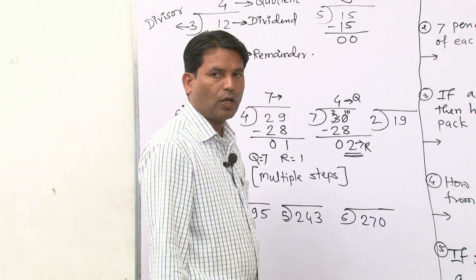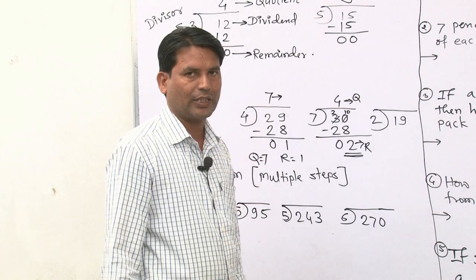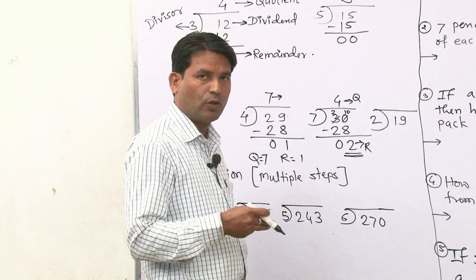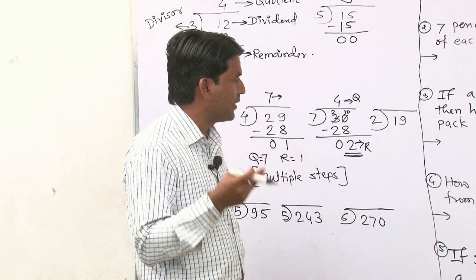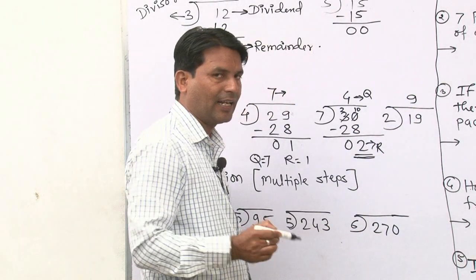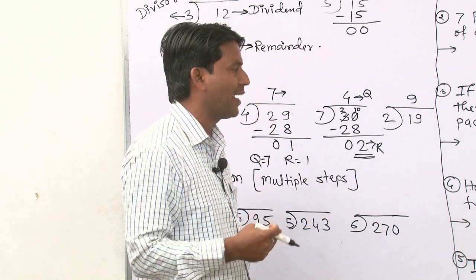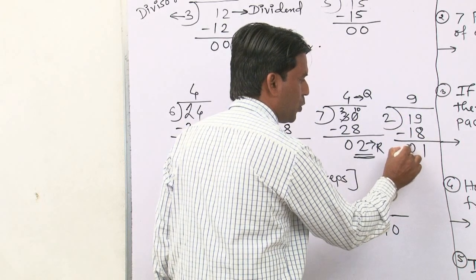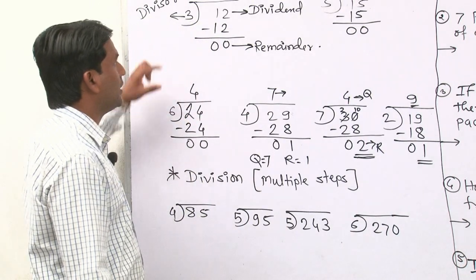Next example: 19 divided by 2. Again we check if 19 appears in the 2 times table. 2 nines are 18 — since 2 tens are 20, which is greater than 19, we take the smaller number 18. Subtracting: 9 minus 8 is 1, 1 minus 1 is 0. So the remainder is 1 and the quotient is 9. These are division examples with one step.